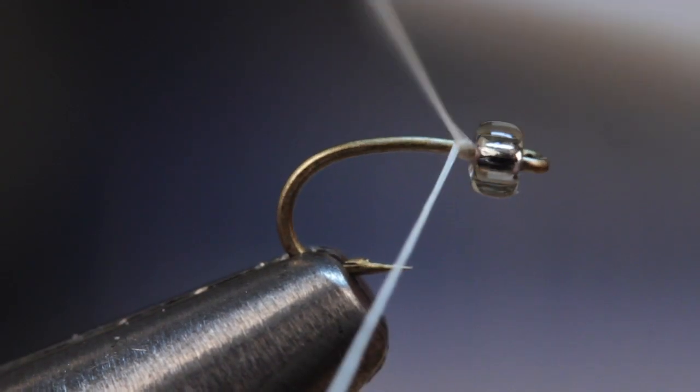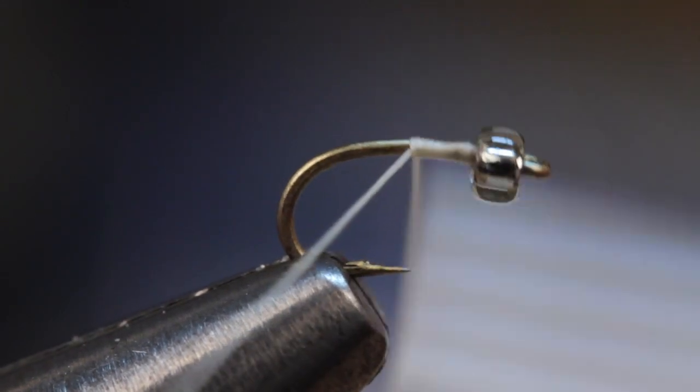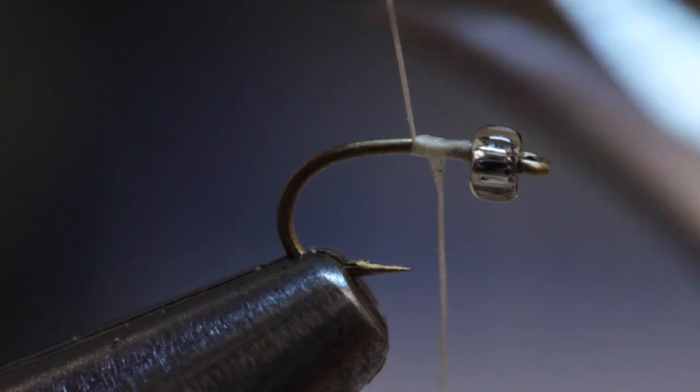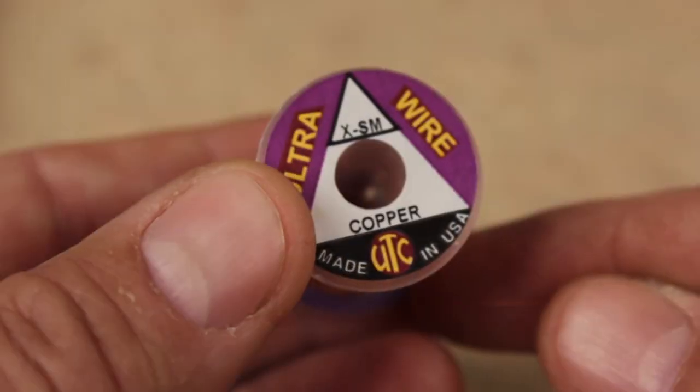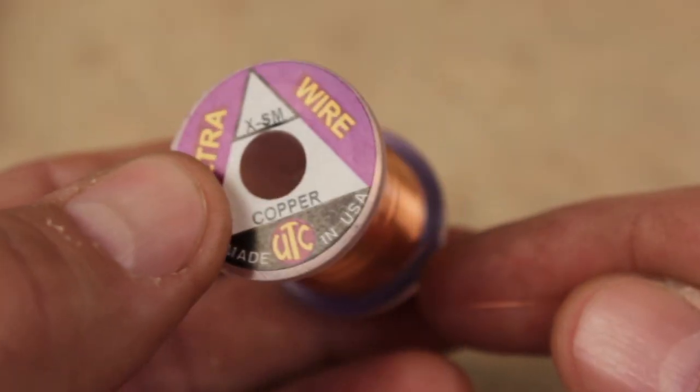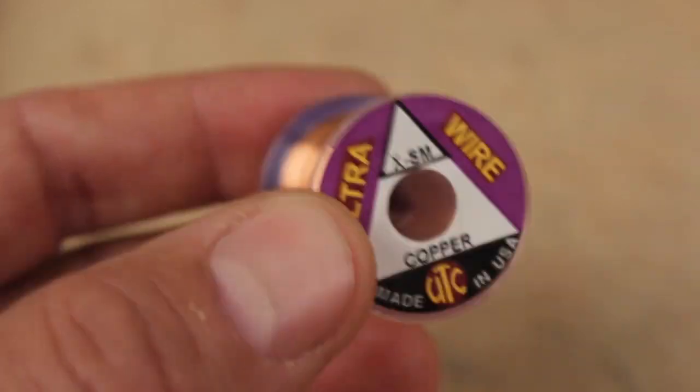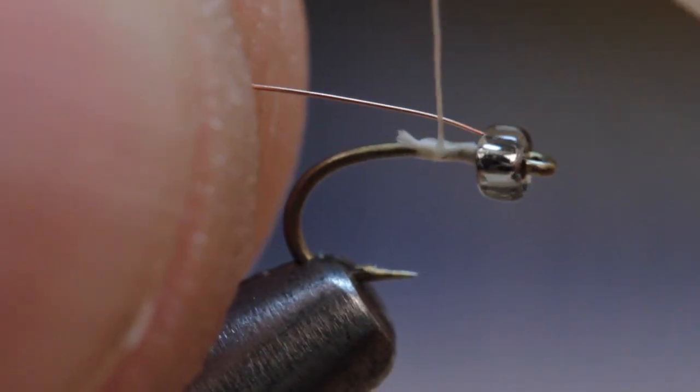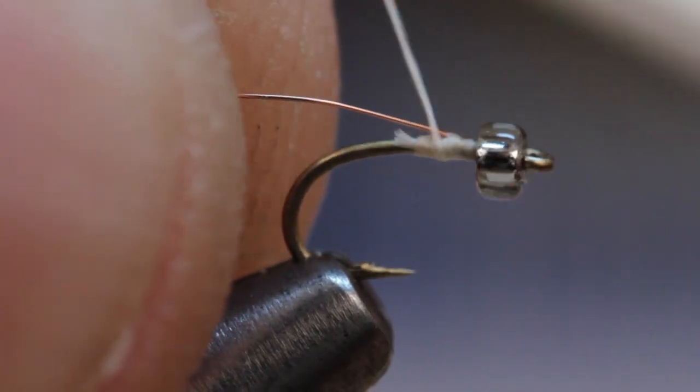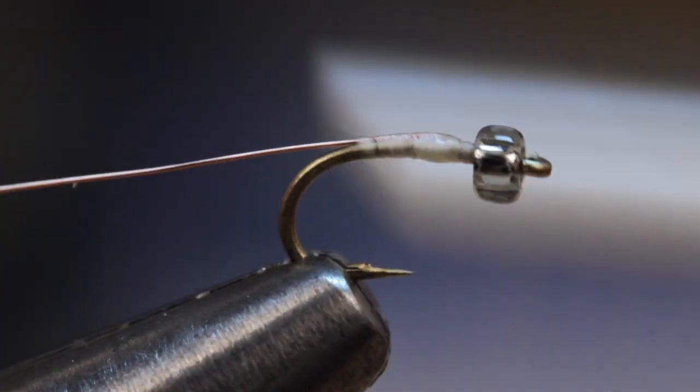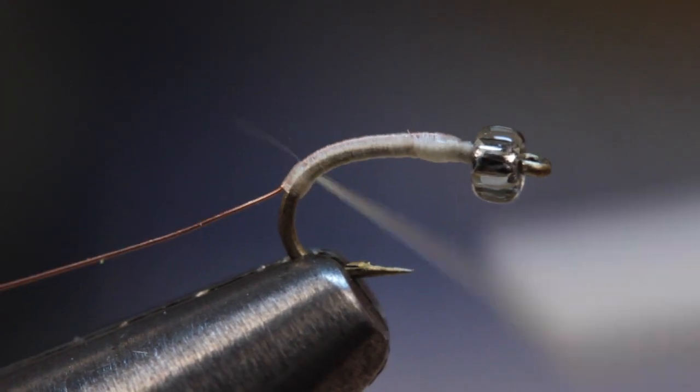Start your thread on the hook shank just behind the bead and then snap or snip the tag end off close. For the wire rib, I prefer extra small copper ultra wire. Cut or break about a 4 inch piece free from the spool. Tie the wire behind the bead and secure it to the top of the hook shank well down into the hook bend and then wind your tying thread back to behind the bead.